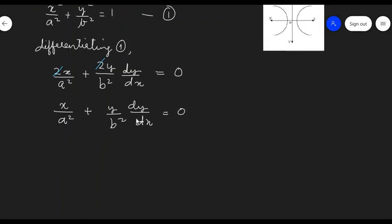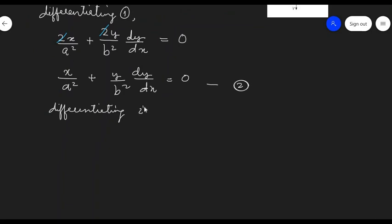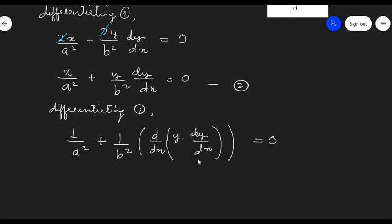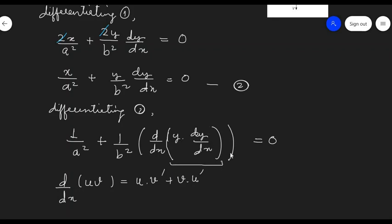Now let's differentiate equation 2 one more time. To differentiate y · dy/dx, we will use the product rule identity: the derivative of two functions u and v in multiplication is u · dv/dx plus v · du/dx. We will use this identity to calculate the differentiation of y · dy/dx.